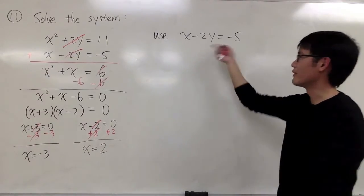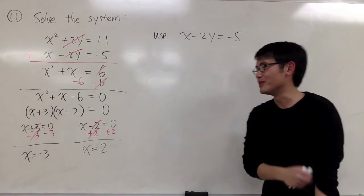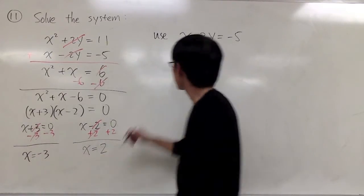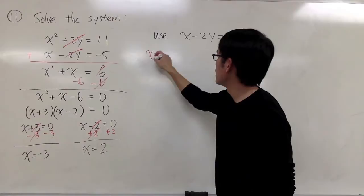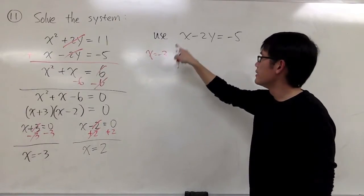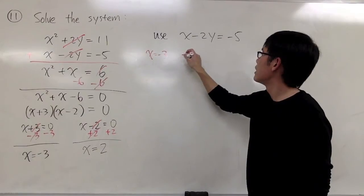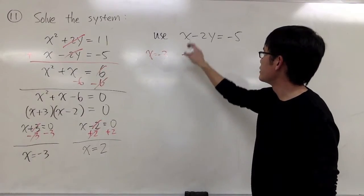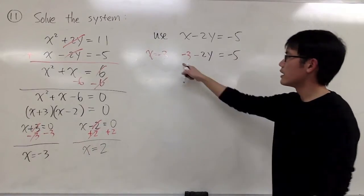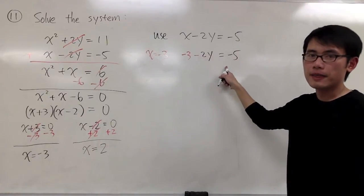Perhaps you argue with me that we have negative numbers, but it doesn't really matter. Anyways, x = -3 for the first one. When x = -3, plug in negative 3 into x. So I have -3 - 2y = -5. That's the equation that I have to solve to solve for y.